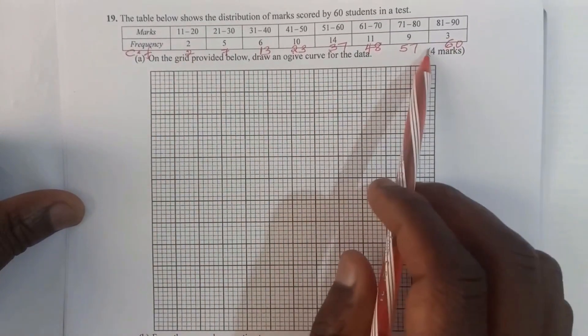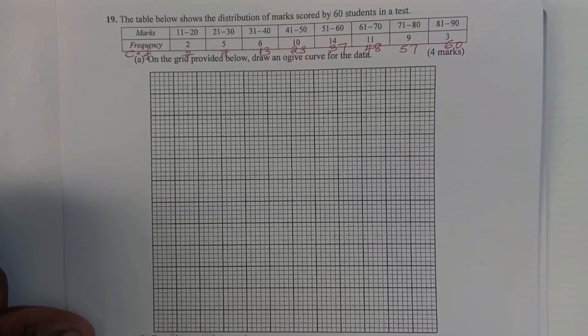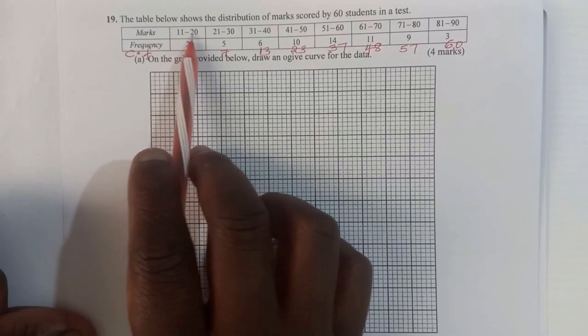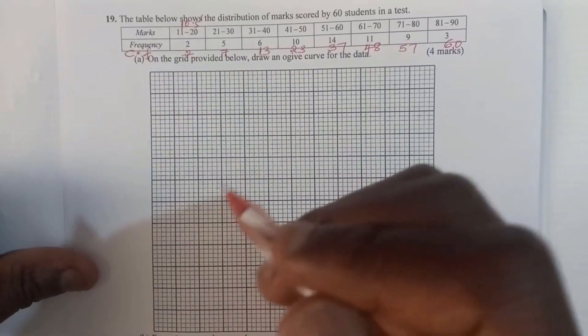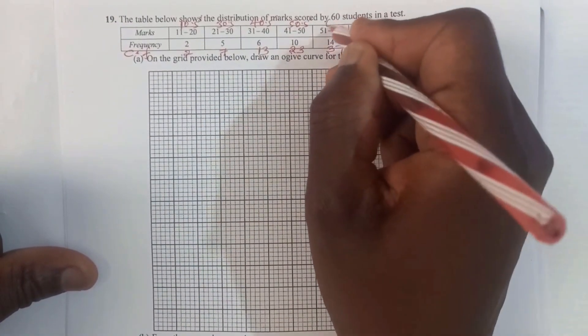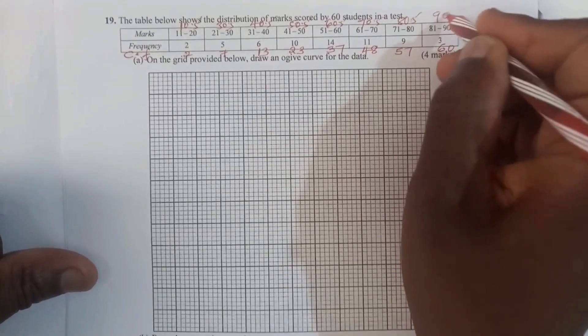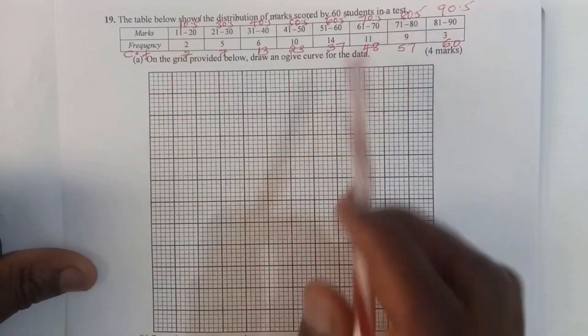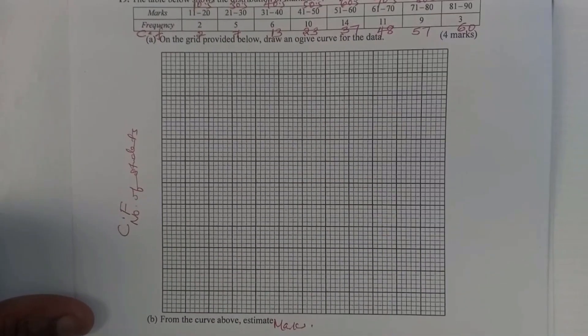That is what you're going to plot on the y-axis for these classes. For the x-axis, you're going to plot the upper class limit — not the midpoints, the upper limit. So for 11 to 20 the upper limit is 10.5, then 30.5, 40.5, 50.5, 60.5, 70.5, 80.5, and the last one is 90.5. These represent the marks, and the y-axis represents the cumulative frequency — the number of students.